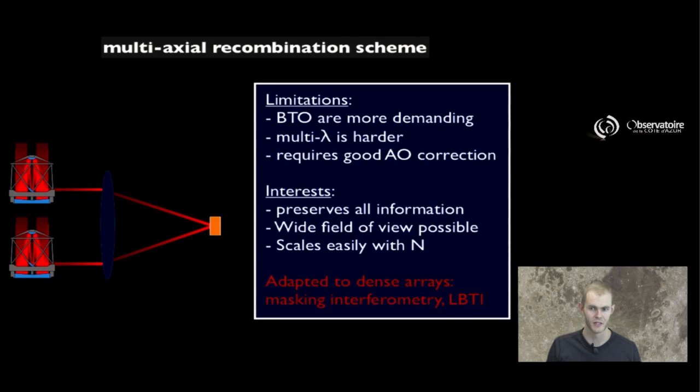What is interesting with one such system is that since all information is preserved, it potentially gives access to very wide field of view information. And the other bit of interest is that one such system easily scales with the number of apertures. Once the optics are set to provide fringes for one, simply shove in another beam and you're going to get three aperture fringes. And it's very adapted, in comparison to the previous case, to dense arrays, arrays for which the size of the aperture is somewhat comparable to the baseline of your interferometer. It's a situation that you experience when you put a mask in front of a telescope to do masking interferometry, or when you're using a telescope like the LBT.